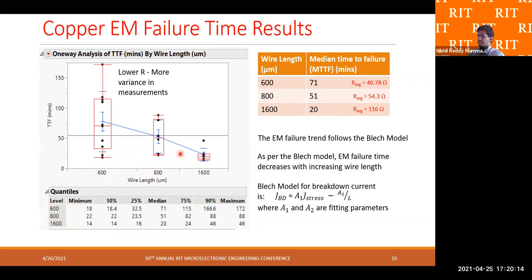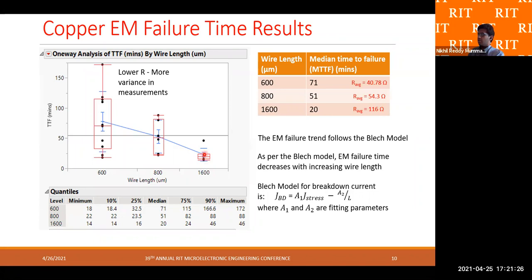The trend where electromigration median failure time decreases with increasing wire length is called the Blech effect. When a shorter wire is subjected to high current density, the metal atoms migrated by the electrons experience a high reverse mechanical stress that causes those migrated atoms to re-migrate back to their original position, suppressing the voids that were formed. This mechanical stress increases with decreasing wire length, so as length increases, failure time decreases. Another observation is that the variance in the distribution of failure times decreases as the wire length increases — shorter wires show greater spread in EM failure distribution.